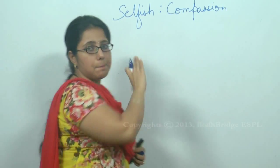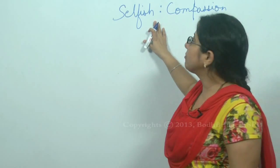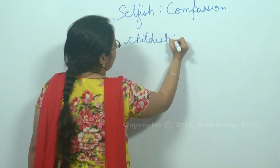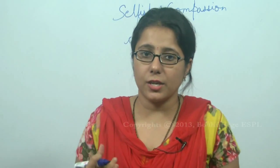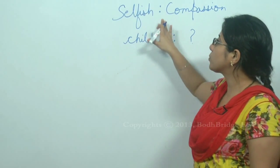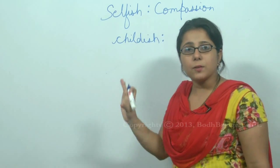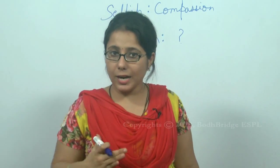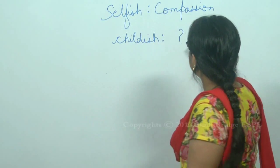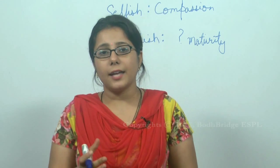Now, selfish and compassion — this is the question pair. Analogy questions are always written with a colon. The question pair is childish and a question mark is given, so you have to fill the question mark. How do you fill it? You have to understand the relationship between the pair. The question pair says someone who is selfish lacks compassion. Similarly, someone who is childish or kiddish lacks maturity. So the answer will be maturity. This is the way analogy works.